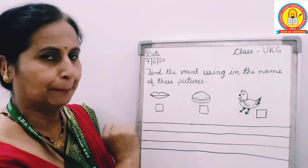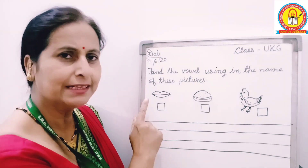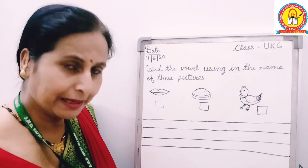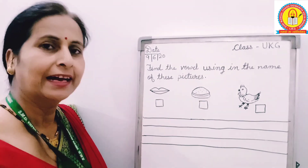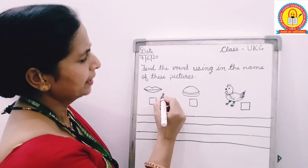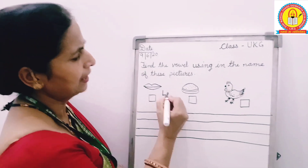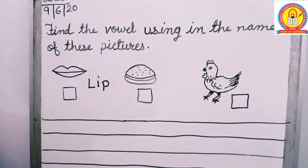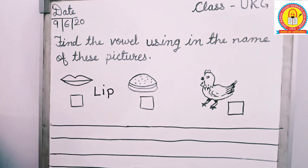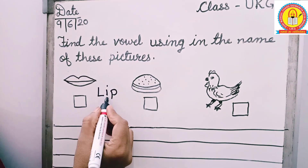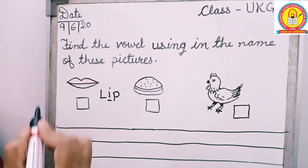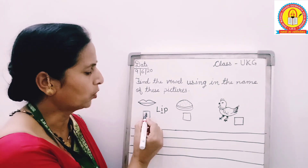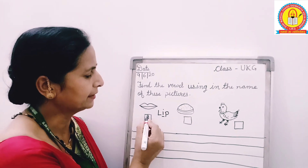This is lip. What is this? This is lip. What is the spelling of lip? L, I, P. L, I and P. Which is the vowel? This is vowel I. So this vowel I — write it inside this box.